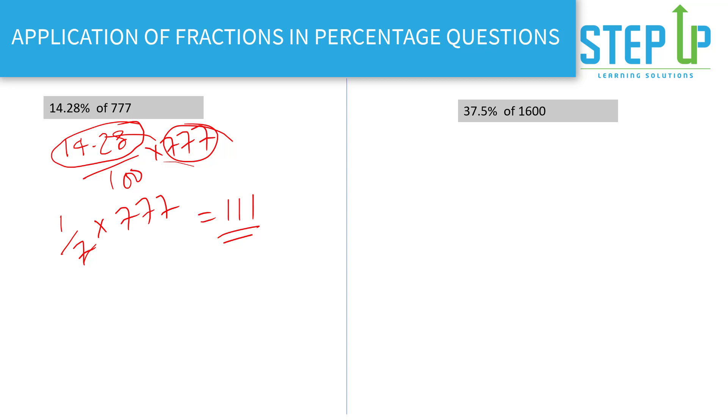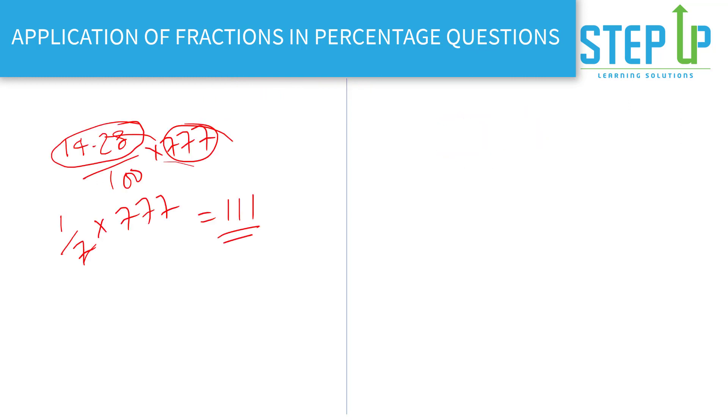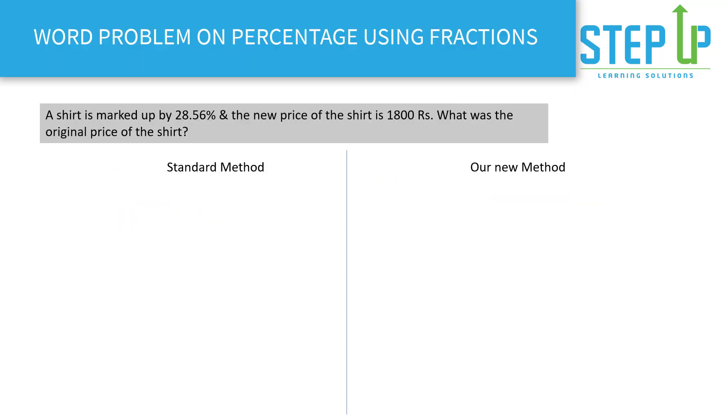Let's look at another problem: 37.5% of 1600. Now we know we learned a few ratios, but can you see a correlation here? Don't you see 12.5 here? So that means if 12.5 is one by eight, three by eight is nothing but 37.5. So that means 37.5 is nothing but three by eight of this number 1600. So orally you can say eight into two hundred is 1600, this is 600, your answer. Orally you can calculate.